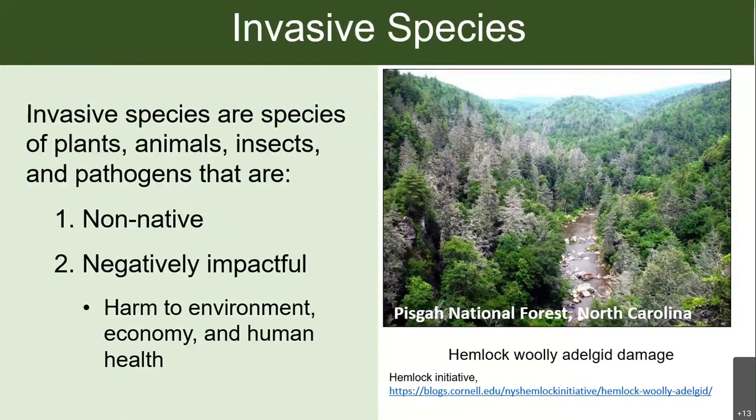Hemlock woolly adelgid is an invasive insect that damages hemlock trees — it lives on the needles and eventually kills the trees. You can see all those trees that have died and turned gray; they call them ghost trees. It's a very dramatic example of invasive species damage and the sort of impacts that they can have.